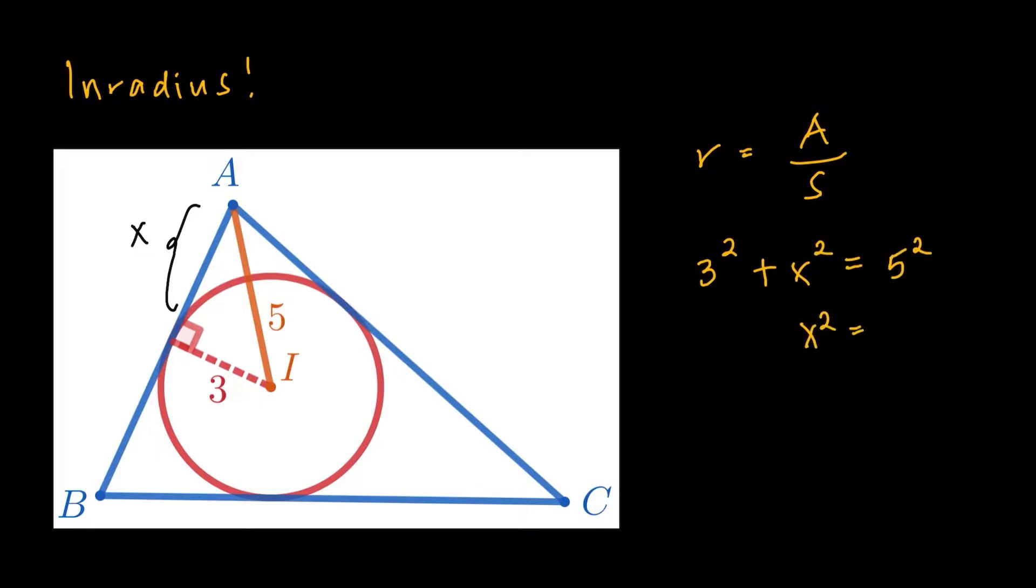3 squared plus x squared equals 5 squared. You're going to get x is equal to 25 minus 9. That's going to be 16. And we're going to get x equals 4 from here. So that length of x, that's going to be 4. And we're going to use that later. But then again, it's a geometry question. It's nice to have a lot of lengths around. All right. So that part's 4.